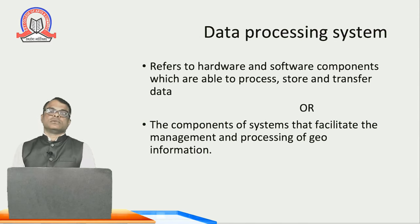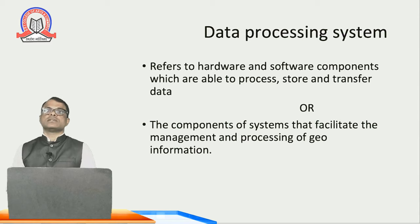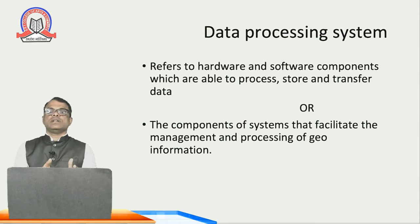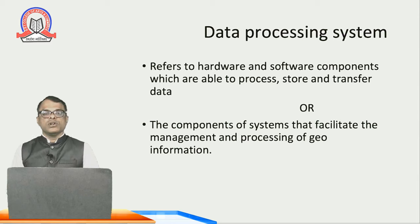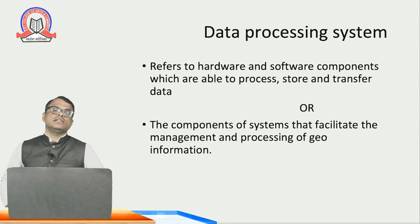What is a data processing system? It is actually hardware and software components which are able to process, store, and transfer data. When we talk about geographic information system, it takes geospatial data information and presents it in some presentable form like maps. So for that it is necessary that we need to save and process the data — that is what we call the components of a system that facilitates the management and processing of geo information, or a data processing system.